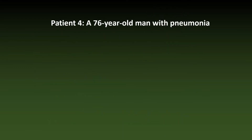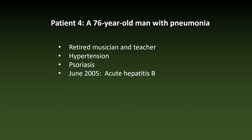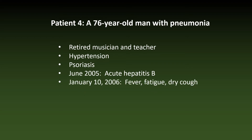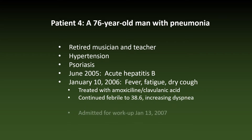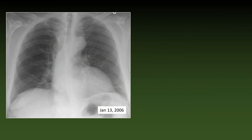The next patient is a 76-year-old man with suspected pneumonia. He is a retired musician and teacher. Past medical history includes hypertension and psoriasis. In June 2005 he had acute hepatitis B, and in January 2006 he had fever, fatigue, and a dry cough. He was treated with amoxicillin-clavulanic acid but continued febrile to 38.6°C, complained of increasing dyspnea, and was finally admitted for workup on January 13, 2007. The PA chest x-ray showed cardiomegaly but was otherwise uninformative; however, the lateral chest x-ray revealed a retrocardiac infiltrate, indicative of pneumonia.